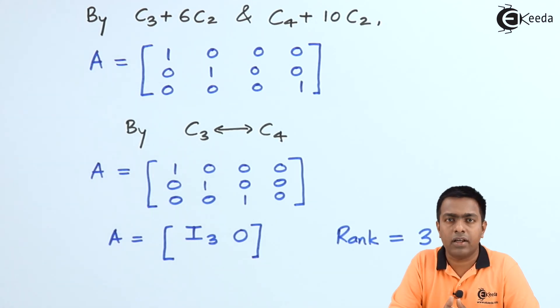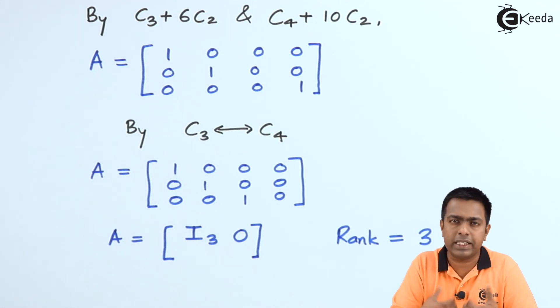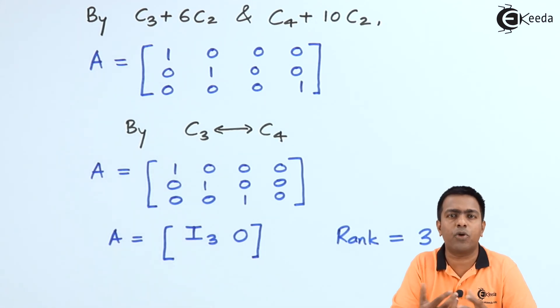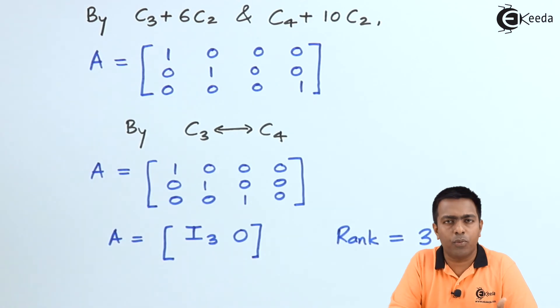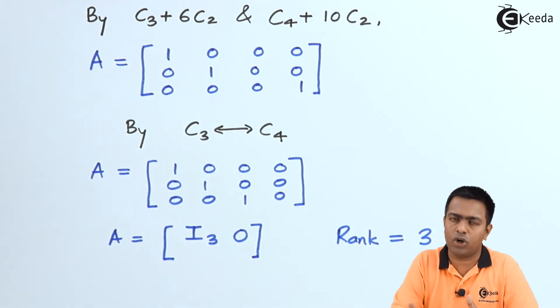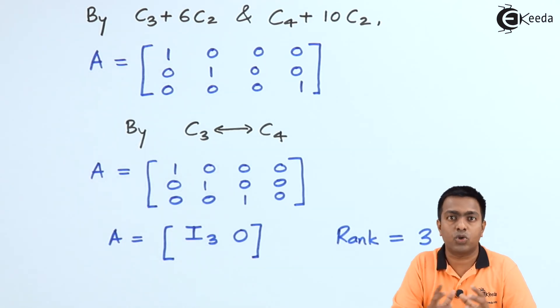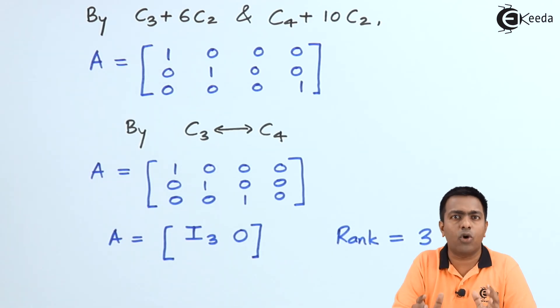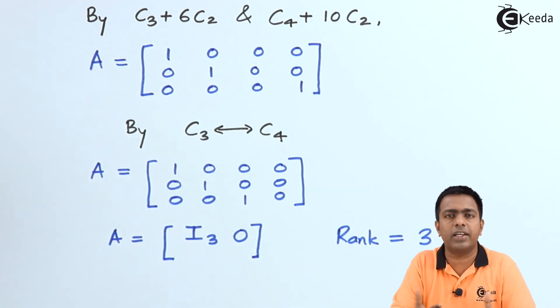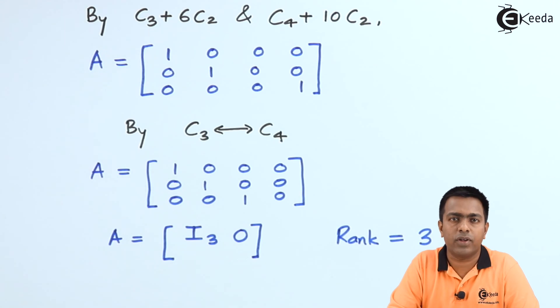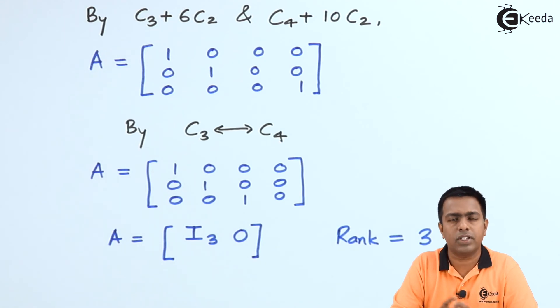We have successfully converted the matrix to normal form and found its rank as 3. I hope you now understand how to convert any matrix into normal form and find its rank. Keep watching, as the next video will cover more numericals on normal form. Thank you for watching and keep following the Eketa channel.